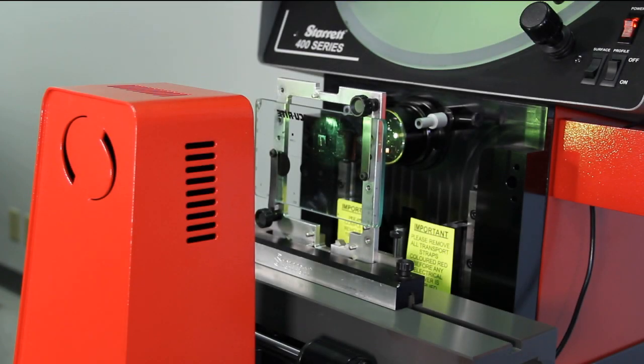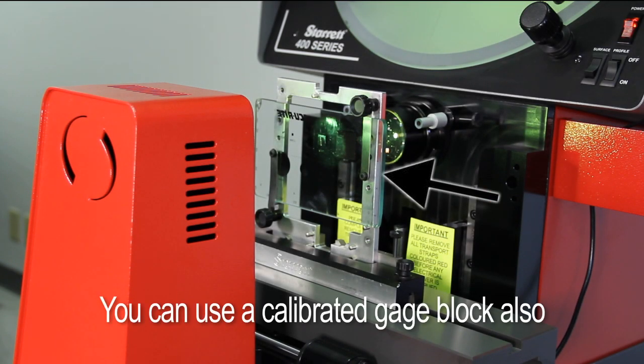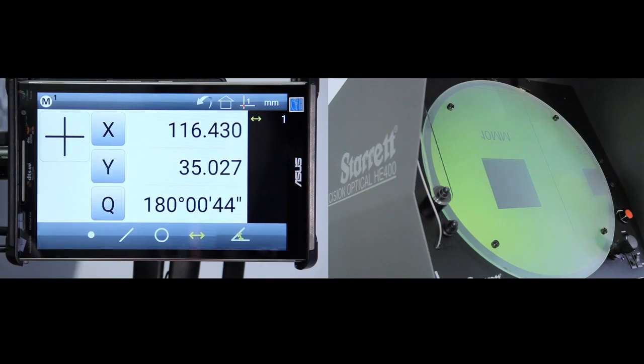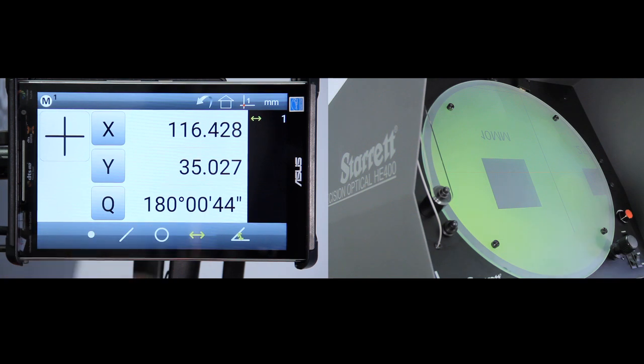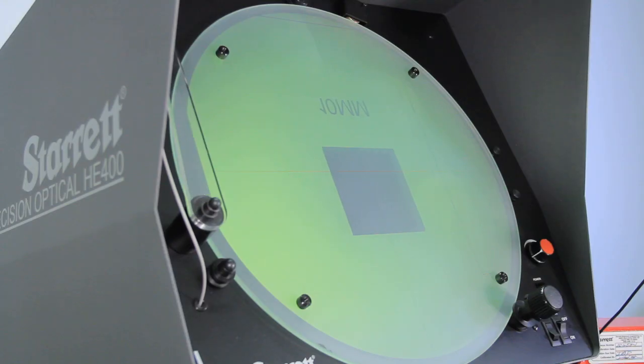Then we're going to actually do a quick measurement with a calibrated artifact. The graticule is the best thing to use. Put it on your stage. Run a quick measurement by eye and make sure that your machine is working properly.